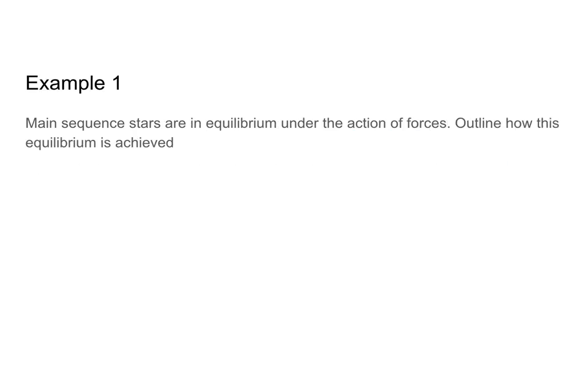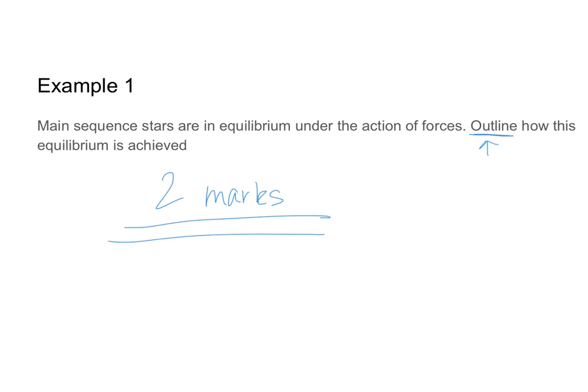So here's a good example of an IB question. Main sequence stars are in equilibrium under the action of forces. Outline how this equilibrium is achieved. Now again, this is a question that is qualitative, so I want you to try solving it on your own before we look at the mark scheme. But two things I want to make sure that you know. First, this question is two marks. So that means you should make two distinct points. And second, I want to point out the command term used here is outline. Per IB, outline means to give a brief account or summary. Again, that's give a brief account or summary. So go ahead, take a moment, pause this video, and write down your answer to example one. And go ahead and prepare a different colored pen so that when we go over the mark scheme together, you can mark up your answer and see how many marks you would give yourself.